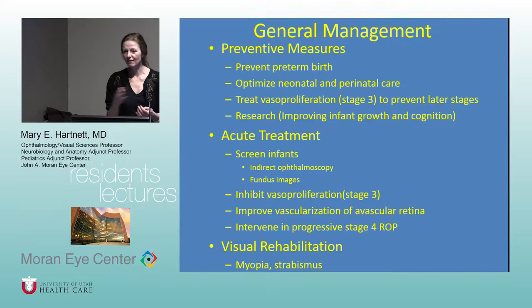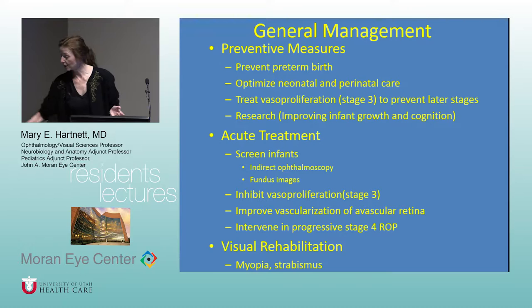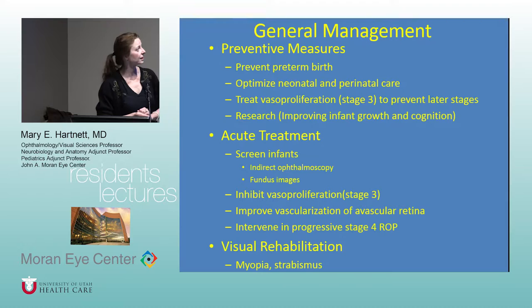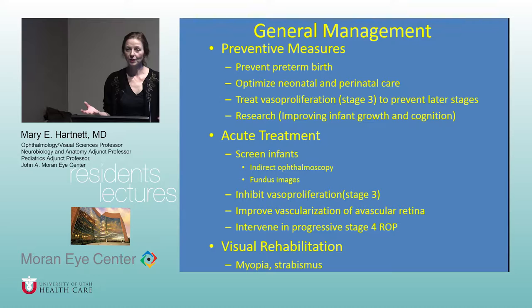Whenever I think of a disease I like to think of prevention, treatment of the acute disease, and rehabilitation. How do we prevent ROP? There was a recent phase 2 study on IGF-1 which did not find an effect on ROP, but IGF-1 is being looked at as a way to promote vascularization in the peripheral retina. There are also ways to prevent premature birth, and we as ophthalmologists can advocate for good prenatal care.